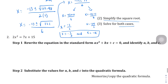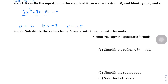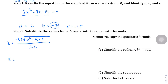Question number two: rewrite in standard form by subtracting 7x and 15 from both sides. The equation becomes 2x squared minus 7x minus 15 equals 0. So a is 2, b is negative 7, and c is negative 15. Now plug into the quadratic formula: negative b — which is positive 7 — plus or minus the square root of b squared minus 4 times a times c, all over 2a.